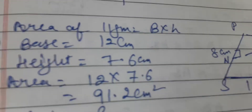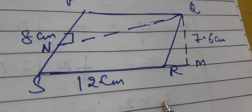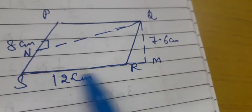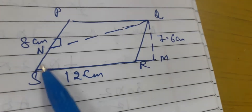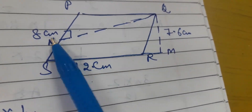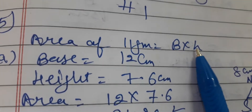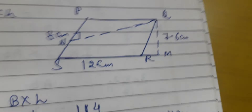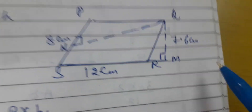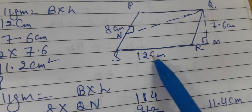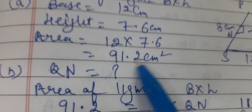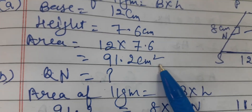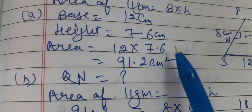In the fifth question, look at this figure given in your book. Base and height of the parallelogram are given, and you have to find height in another part. The formula for area of a parallelogram is base into height. Base is 12 centimeters and height is 7.6 centimeters. Multiplying these, the area of the parallelogram is 91.2 square centimeters.